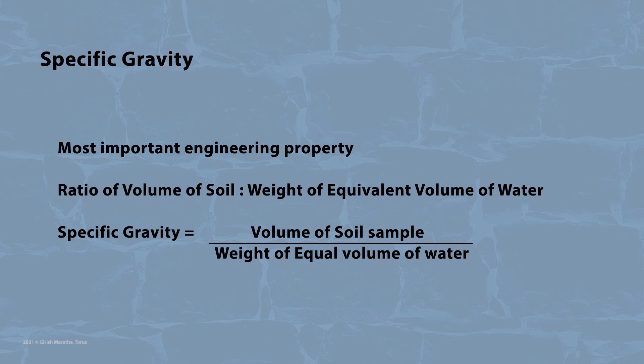Specific gravity of soil is ratio of given volume of soil at any given temperature to the weight of equal volume of distilled water taken at the same temperature. In simple terms, it is equivalent weight of same volume of water as is the volume of soil.